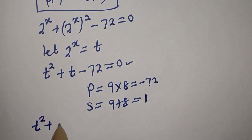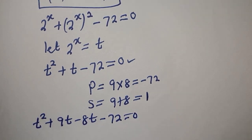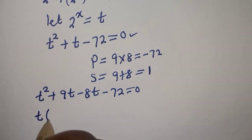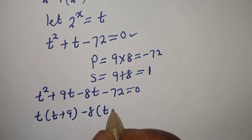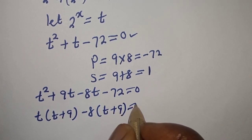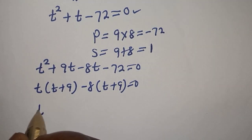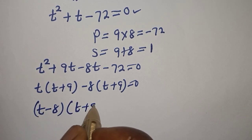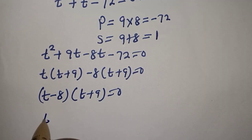We have t squared plus 9t minus 8t minus 72 is equal to zero. t is common here: t bracket (t plus 9) minus 8 bracket (t plus 9) is equal to zero. Then (t plus 9) is common, giving us (t minus 8)(t plus 9) is equal to zero.